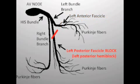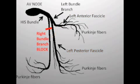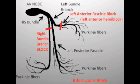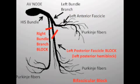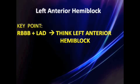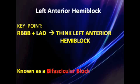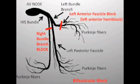On the other hand, right bundle branch blocks in combination with either an anterior or posterior hemi block is actually quite common. Right bundle branch block plus left axis deviation means you probably have an anterior hemi block — and you will see this. Posterior hemi blocks are actually quite rare in general, but you would see something like a right bundle branch block and right axis deviation.